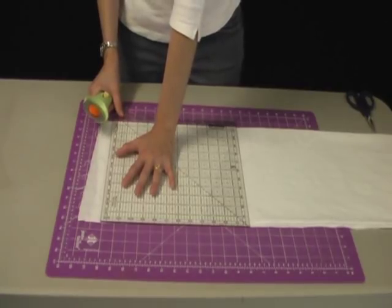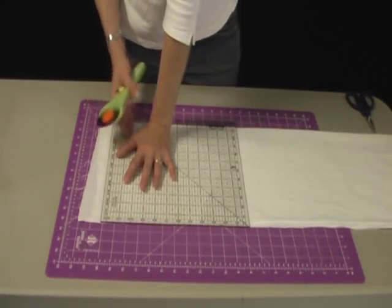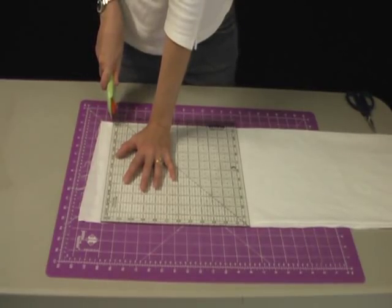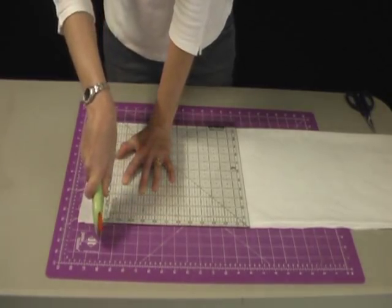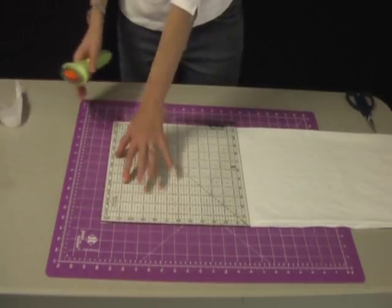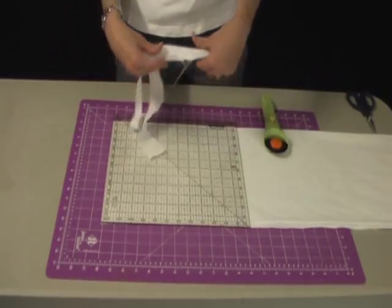So I put my hand down on my rotary ruler, and I hold it very firmly. I don't want this ruler to shift at all. I hold down my rotary cutter, and I make one smooth cut from the beginning to the end, moving away from me. So that's my first cut. I just squared up the end of my fabric.